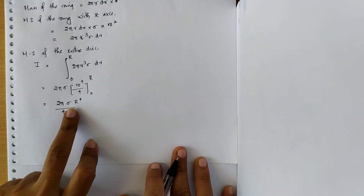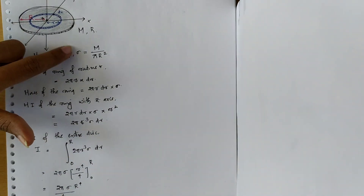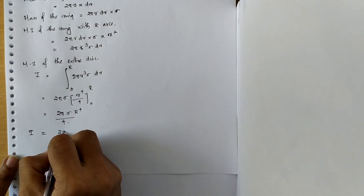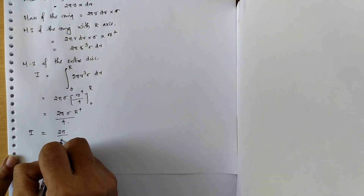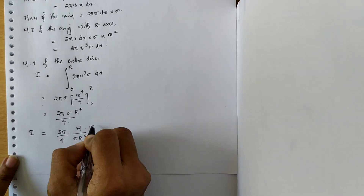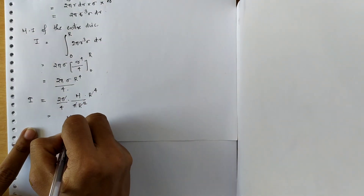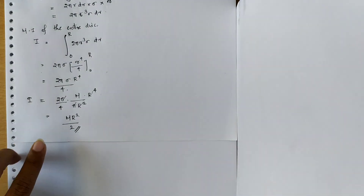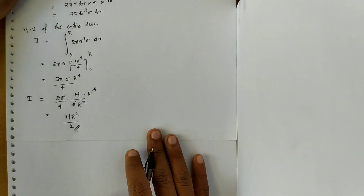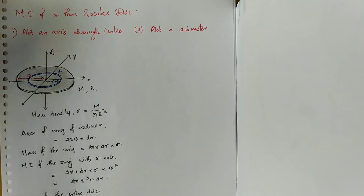We have the moment of inertia in terms of mass density sigma. Now substituting sigma equals M divided by pi R square, the moment of inertia I equals 2 pi over 4 times M over pi R square times R to the power 4. Cancelling the terms, you get the moment of inertia as M R square by 2. So M R square by 2 is the moment of inertia of the circular disc about the Z-axis passing through the center and perpendicular to the plane.